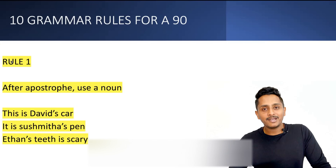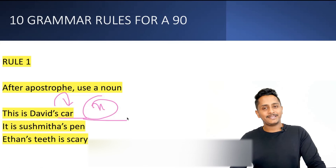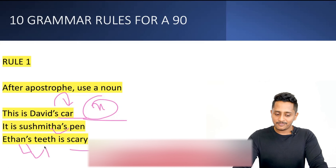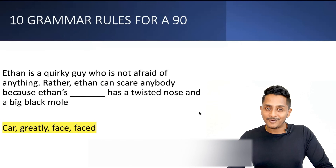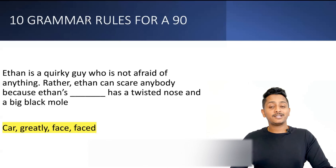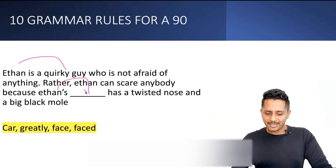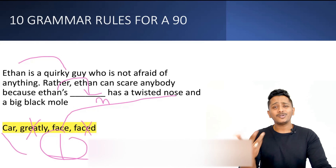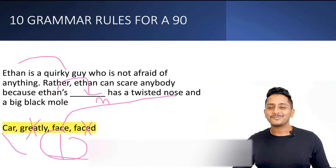Let me share my screen. Rule one: after apostrophe, a noun will come. Remember this golden tip — a lot of fill-in-the-blanks will be based on this. 'This is David's car' — if there's a blank after apostrophe, it will be a noun only. 'Sushmita's pen', 'Ethan's teeth' — after apostrophe, a verb will not come, only a noun. So in the example: 'Ethan's dash has to come' — 'faced' is a verb, 'greatly' is an adverb, the answer is 'face' (noun). When you know grammar in advance, it becomes much easier.